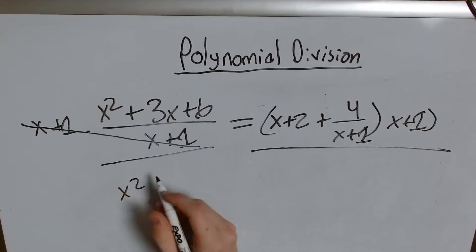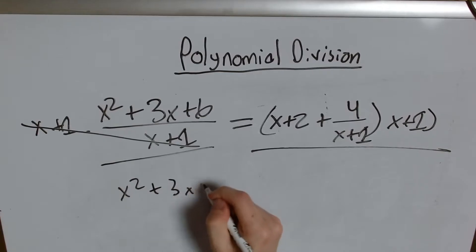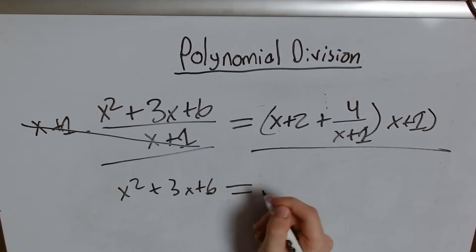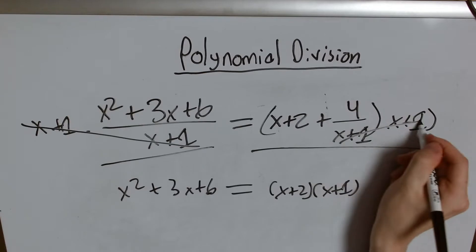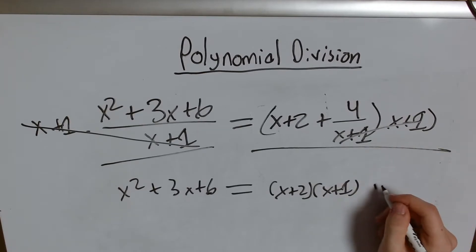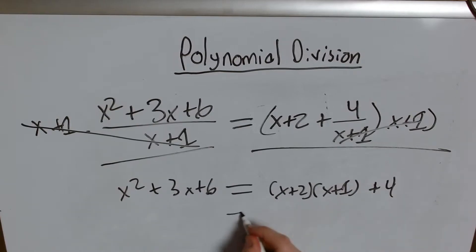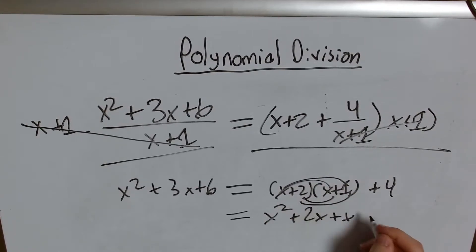On this side I basically cancel out this fraction. And I have x squared plus 3x plus 6, and on this side I have x plus 2 times x plus 1 and then these cancel out so I just have plus 4. Let's do the math. That's x squared plus 2x plus x plus 2 plus 4.